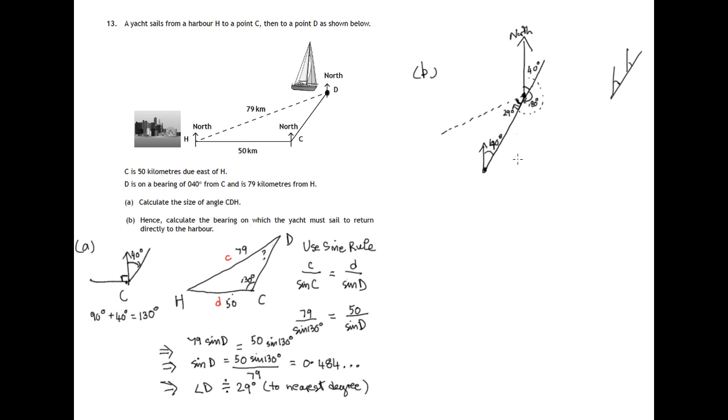So required bearing will be the sum of these. The required bearing is the 40 degrees up there, which came from down there. The 180 degrees, because we extended this line. It's a straight line. And the 29 degrees that we got from part A. So 180 and 40 is 220 plus 29 is 249. So it's 249 degrees.